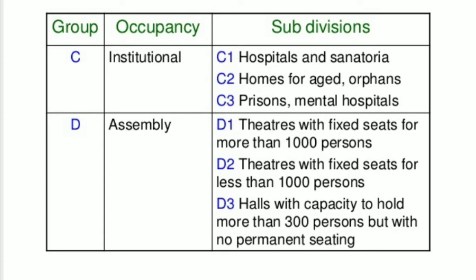Group C is Institutional Buildings, with three subgroups. C1 covers Hospitals and Sanatoria, and C2 covers Homes for Aged Persons and orphanages.